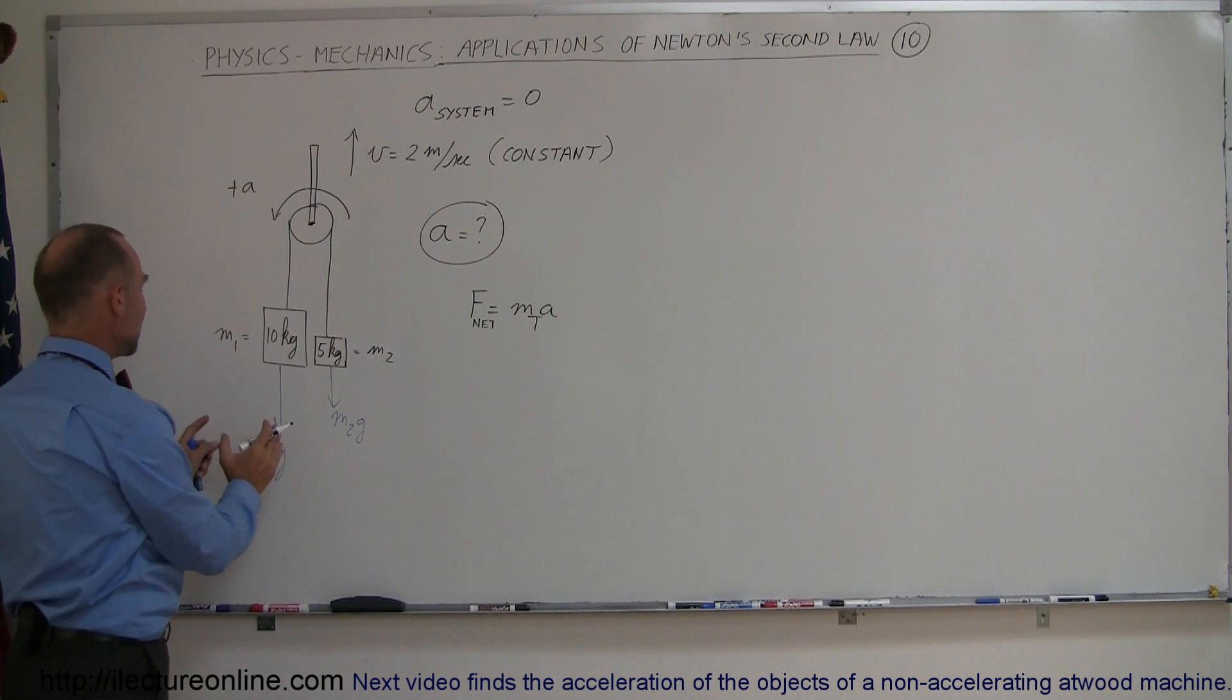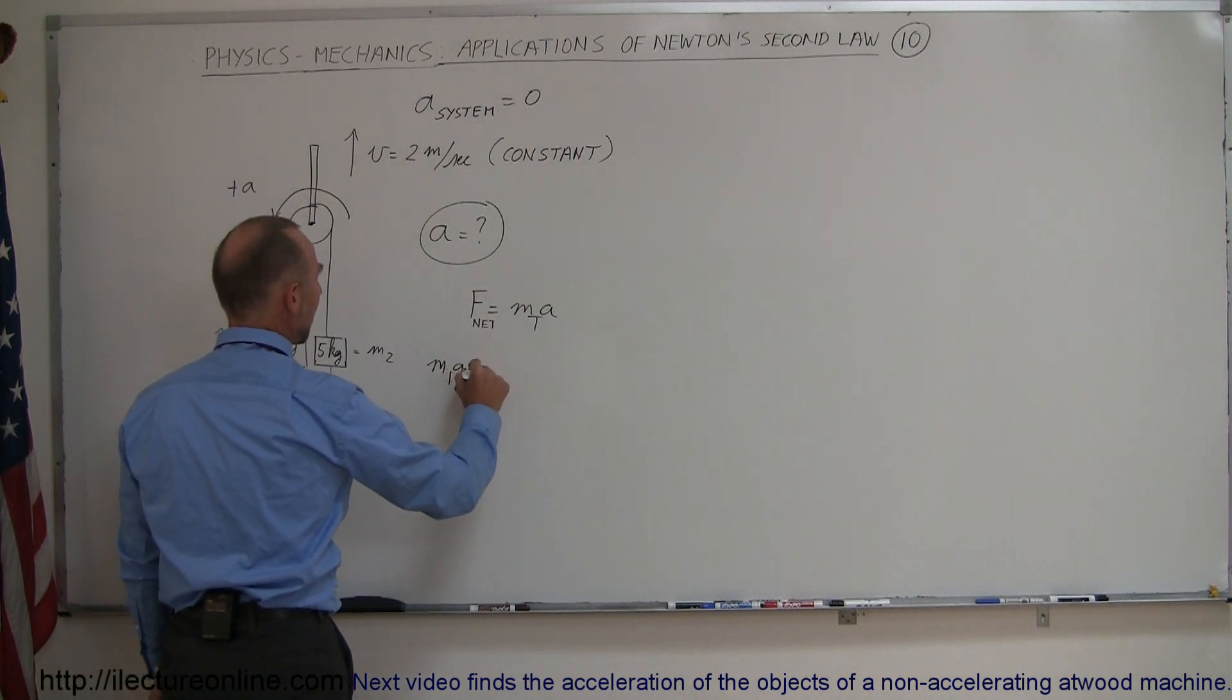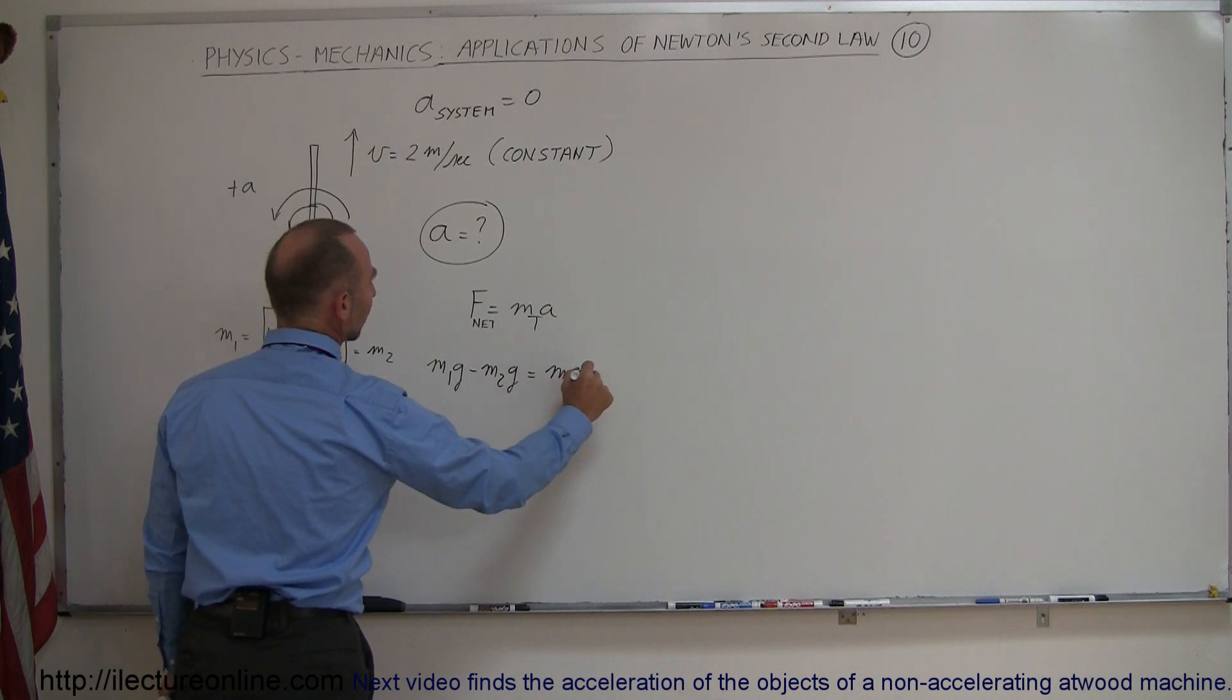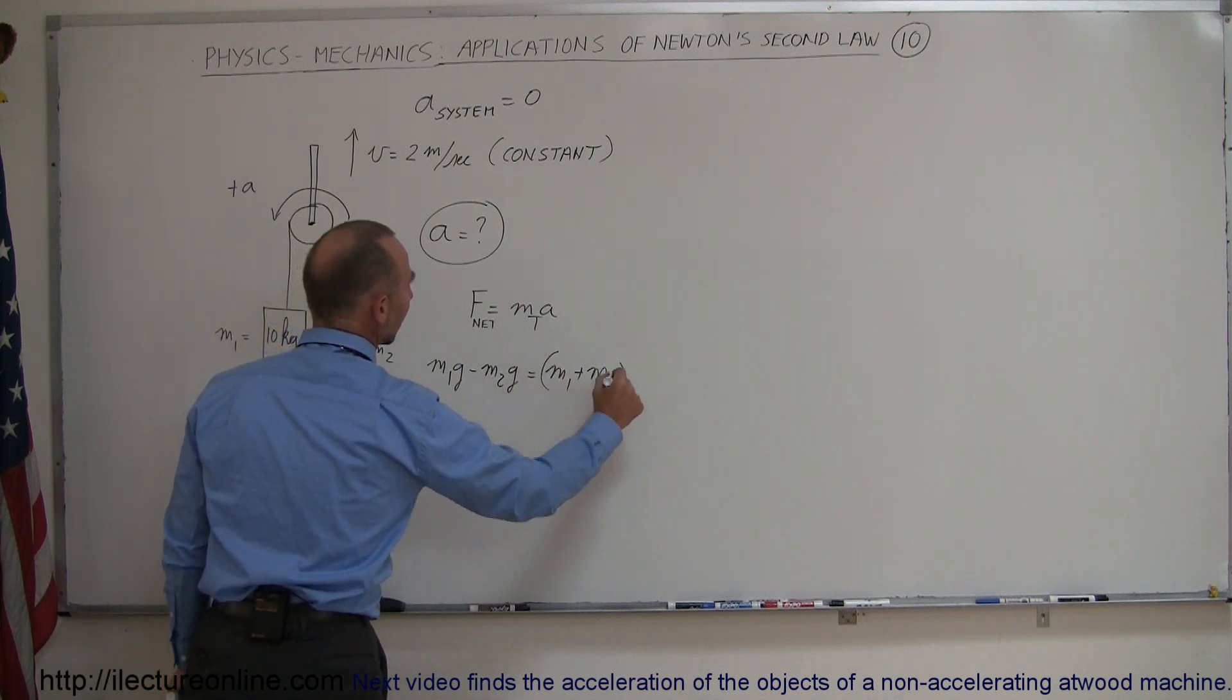The net force is going to be the positive force aiding the acceleration and the negative force opposing the acceleration. So this will be M1g - M2g = (M1 + M2) × a,